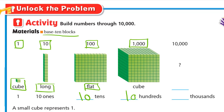Then think of the next shape — here it's a cube. So the next one will be 10 of this cube, which is 10 big cubes, so it will be a big long. So 10 big cubes is big long. The cube is 1,000, so the long is 10 thousands.